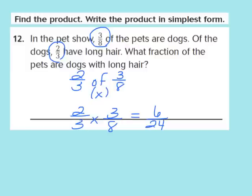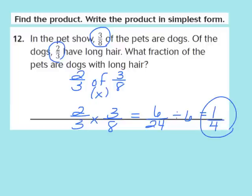The directions say to write the product in simplest form. Both 6 and 24 share a common factor of 6. I can divide both numbers by 6. 6 divided by 6 gives me 1 as my numerator, and 24 divided by 6 gives me 4 as my denominator. So 1/4 of the pets are dogs with long hair. We circle that 1/4 as our final answer in simplest form.